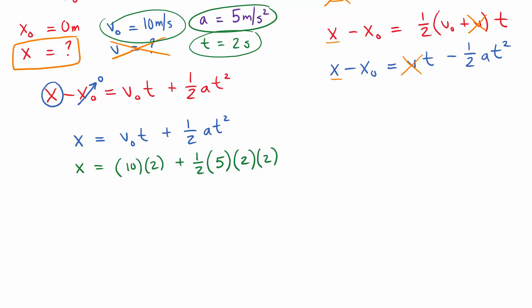Now we can just do the math here. We don't need a calculator for this. 10 times 2, that's 20. Plus, well, 2 times 2 is 4. And half of 4 is 2. So this is going to be 2 times 5. So that's just 10. And there we have it. We see that the final position is 30 meters.